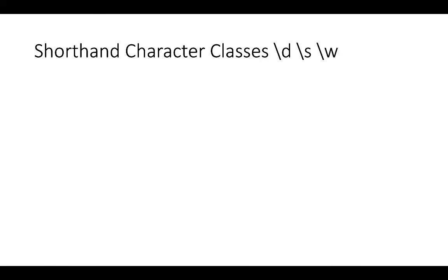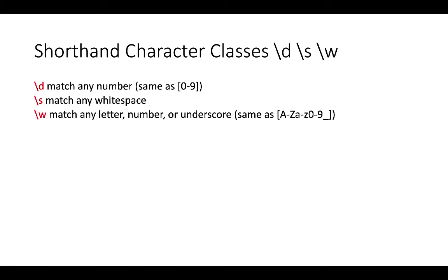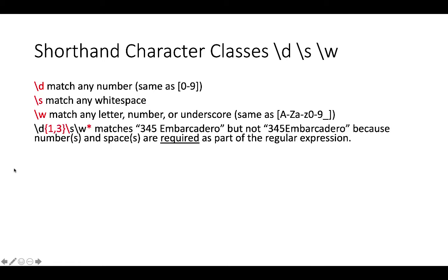There are also shorthand character classes. '\d' matches any digit — same as '[0-9]', where 'd' stands for digits. '\s' matches any whitespace, where 's' stands for space. '\w' matches any letter, number, or underscore — same as '[A-Za-z0-9_]'. When you put them together, such as '\d{1,3}\s\w*', it will match '345 inbaccadaro' but not '345inbaccadaro' without the space, because numbers and spaces are both required.